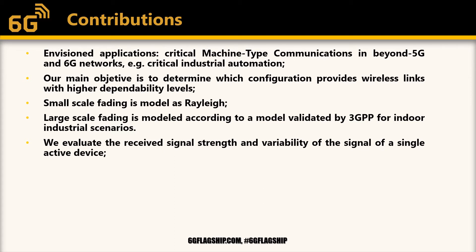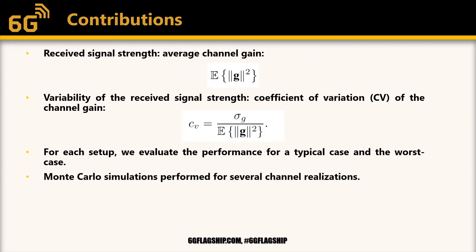We then evaluate the received signal strength and the variability of the signal of a single active device. The received signal strength is represented by the average channel gain, while the variability of the received signal strength is represented by the coefficient of variation of the channel gain, which is a relative standard deviation of the channel gain. For each setup, we evaluate the performance for the typical case and for the worst case, and Monte Carlo simulations are performed for several channel realizations.